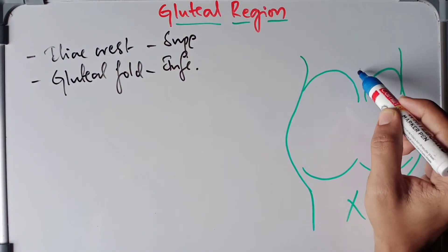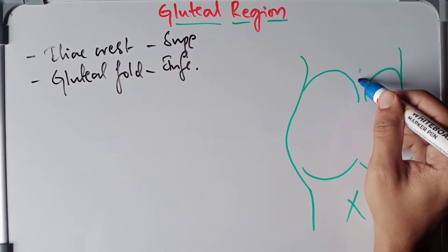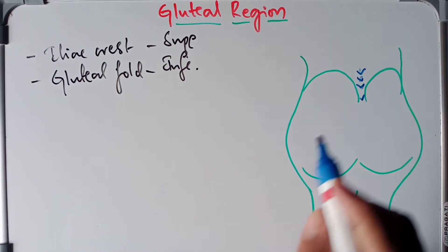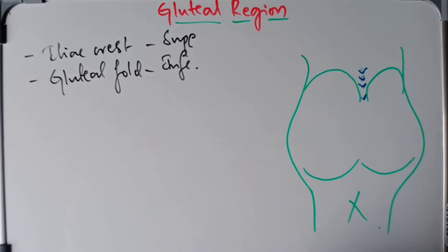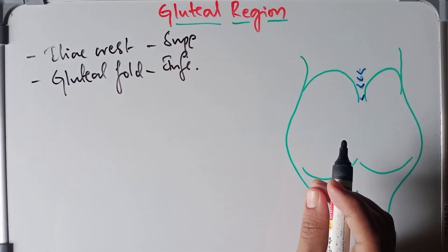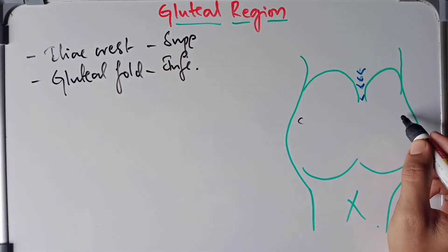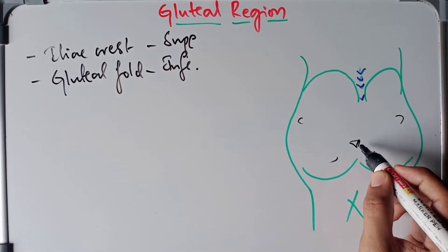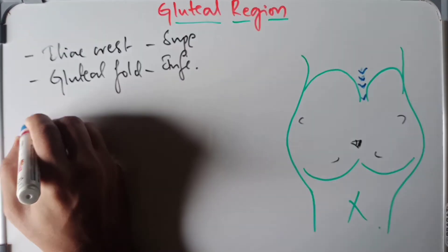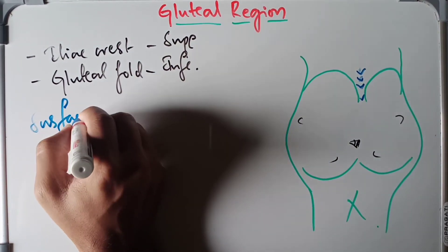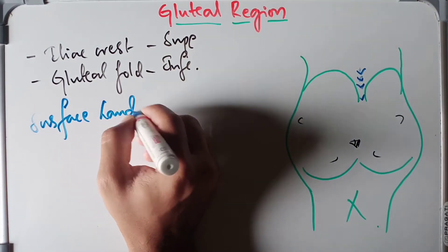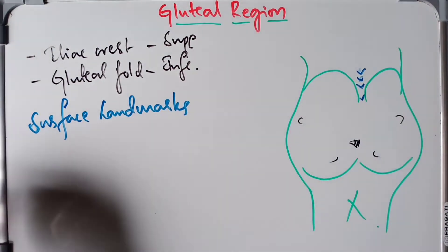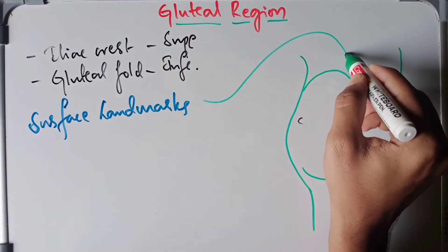The different surface landmarks we are going to see are the L4, L5, S1, and S2 spinal segments. We are also going to find the tip of the greater trochanter, the ischial tuberosity, and the tip of the coccyx.